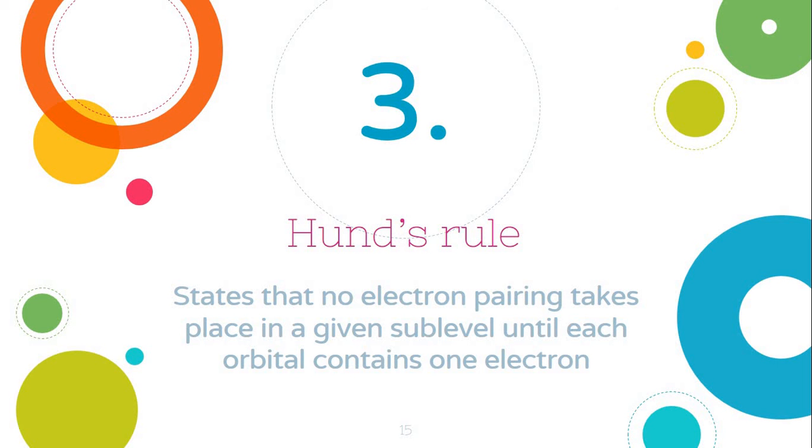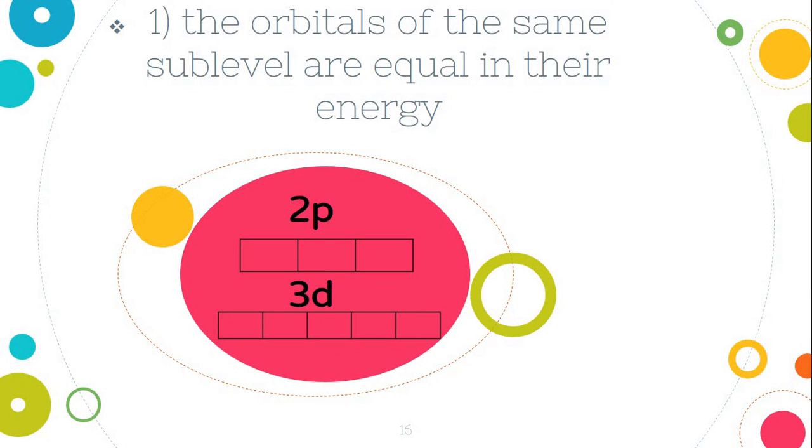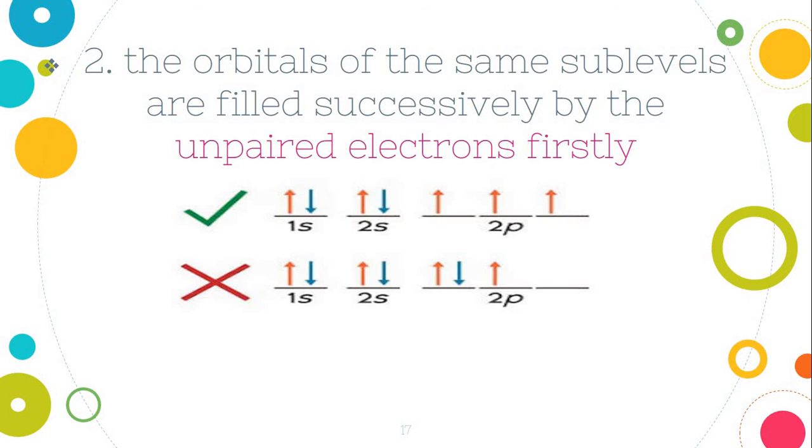Hund's rule. It states that no electron pairing takes place in a given sublevel until each orbital contains one electron. The orbitals of the same sublevel are equal in their energies.